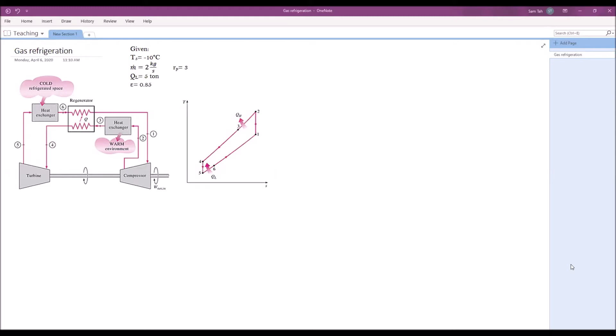So we want T5 to be at negative 10 degrees C. T5 is the temperature, the lowest temperature in the cycle. It's the temperature of air going into the cold heat exchanger, so we want to keep that at negative 10 degrees C. Mass flow rate is 2 kg per second, and pressure ratio in the turbine compressor is taken to be 3.